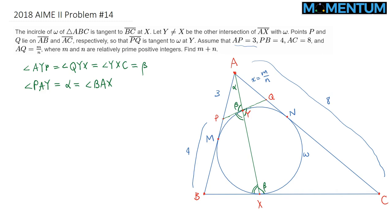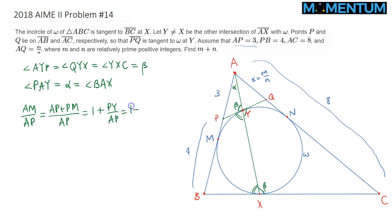Now let's make some calculations. Consider the ratio AM to AP. We can split AM as AP plus PM, so AM over AP equals 1 plus PM over AP. But PM equals PY by equal tangents, so this is PY over AP. Applying the law of sines on triangle APY: PY is opposite angle alpha and AP is opposite angle beta, so this ratio is sine alpha over sine beta.